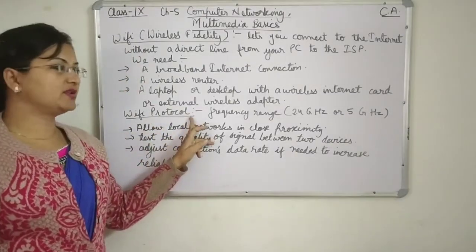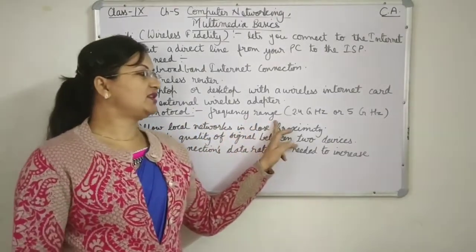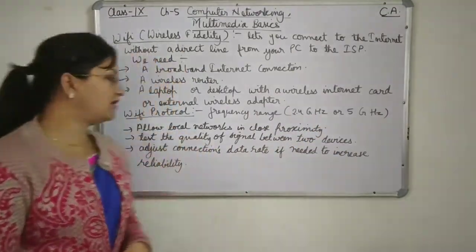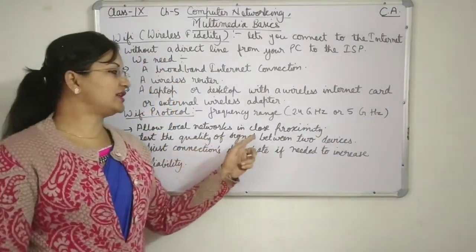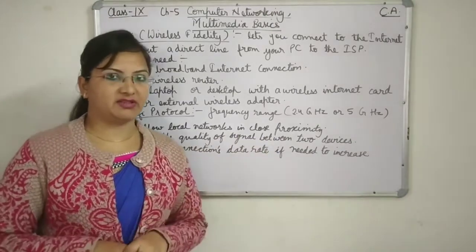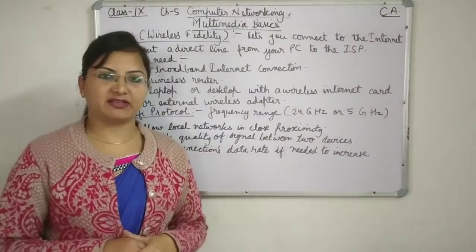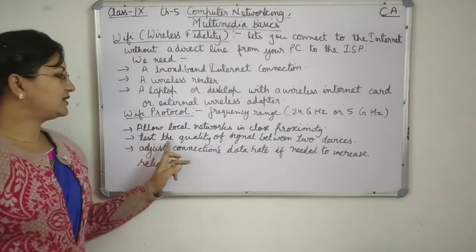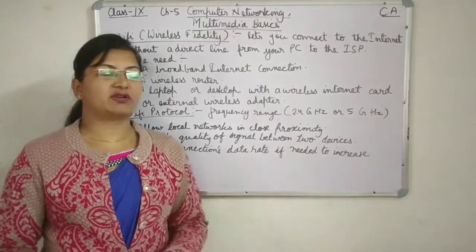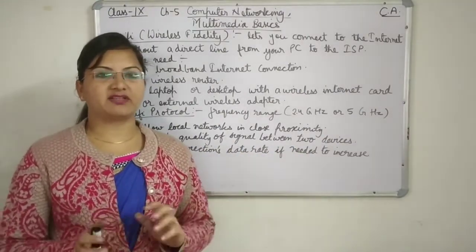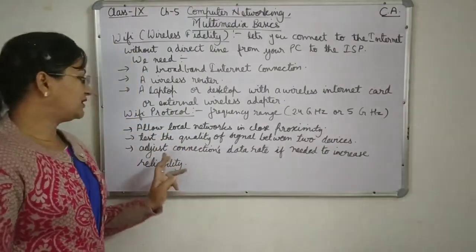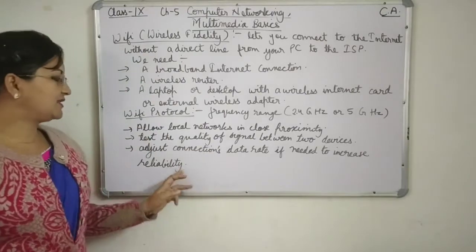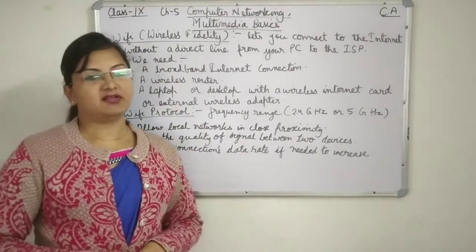The Wi-Fi protocol works in the background. Its frequency range is from 2.4 GHz or can be up to 5 GHz. It will allow local networks in close proximity — a few devices that are very close to each other can be connected. Then it tests the quality of the signal between two devices, and if the quality of the signal is not sufficient, it will adjust the connection data rate to increase the reliability of the network.